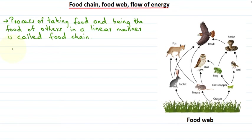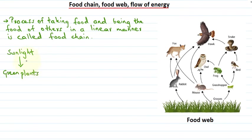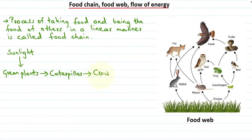We can depict a food chain as follows. There is the sun, and we get sunlight from it. This sunlight is utilized by green plants. They trap sunlight and convert solar energy into chemical energy. Then there are herbivores such as caterpillar — caterpillars feed on green plants. Then there is crow, which is an omnivore that feeds on caterpillar.